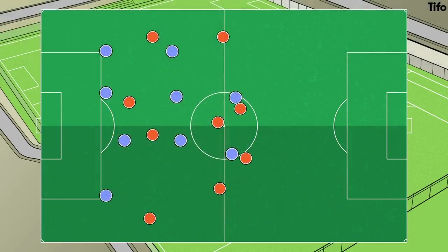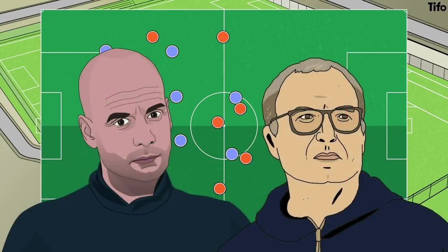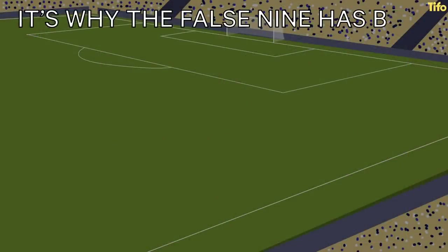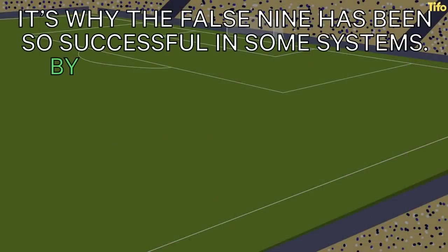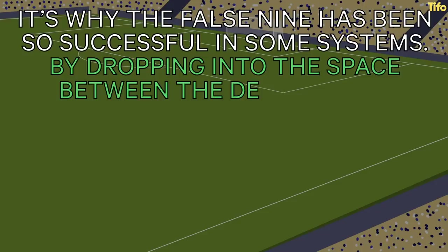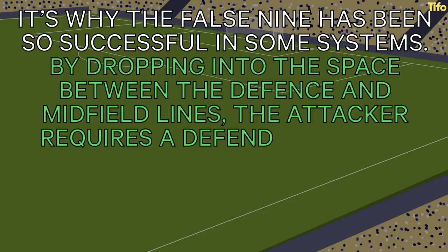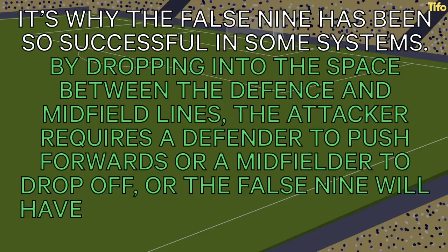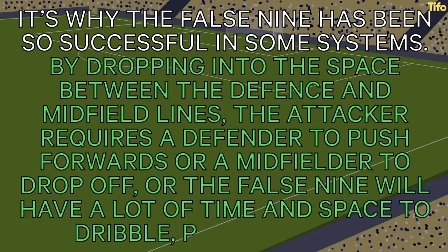But why does it matter? Because, and this is a key concept of positional play, the movement of attacking players into these spaces causes positional overloads. That means that by manoeuvring players into these gaps, it disrupts the opposition's defensive shape and forces them to break their line. It's why the false nine has been so successful in some systems. By dropping into the space between the defence and midfield lines, the attacker requires a defender to push forwards, or a midfielder to drop off. Or the false nine will have lots of time and space to dribble, pass or shoot.